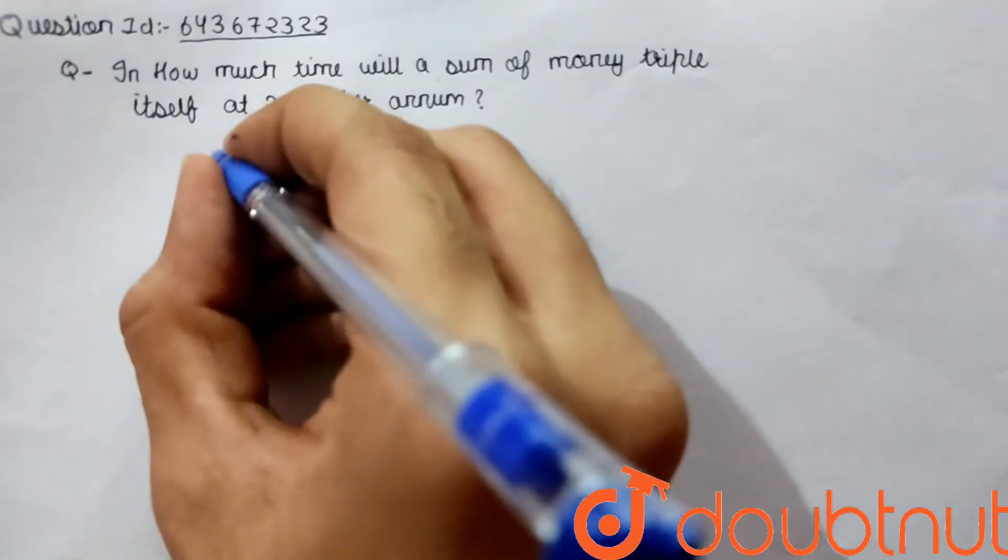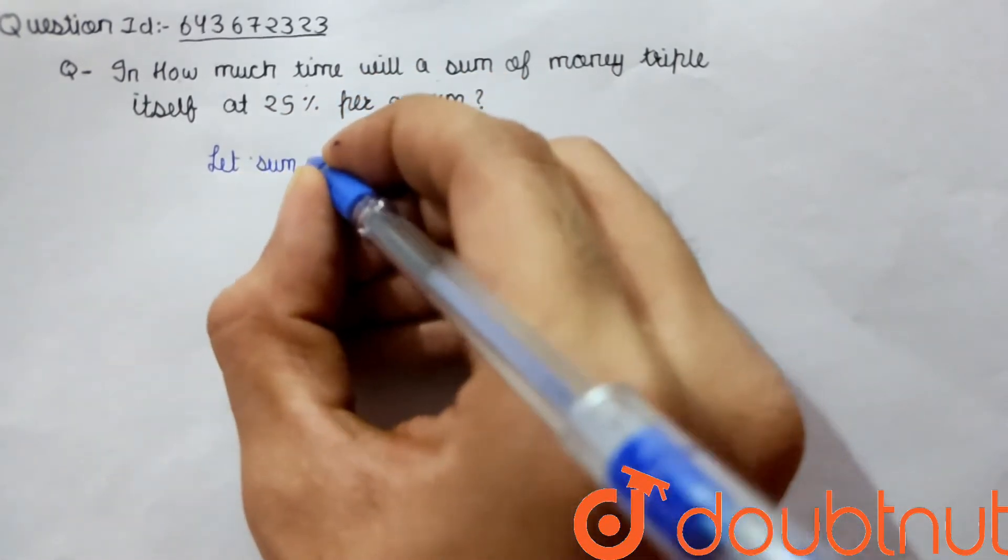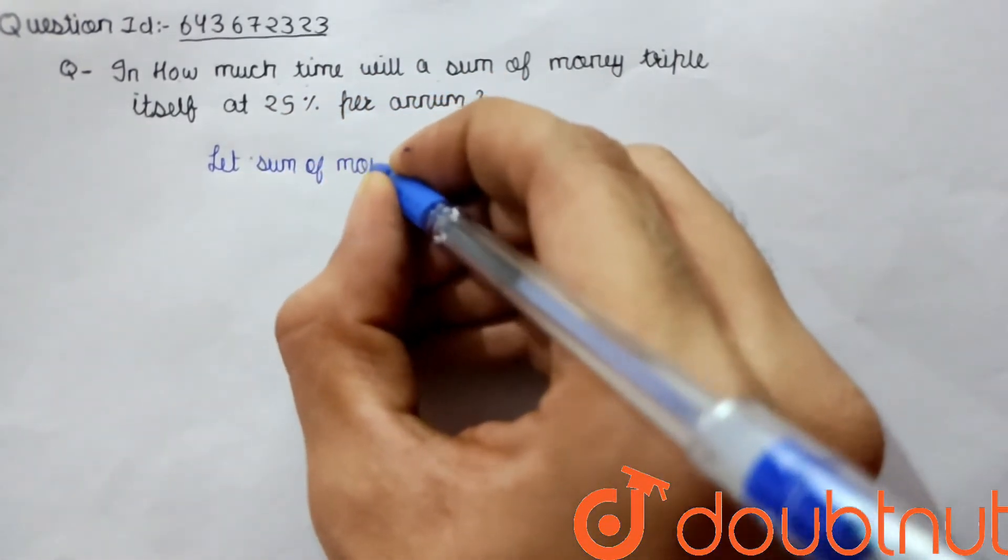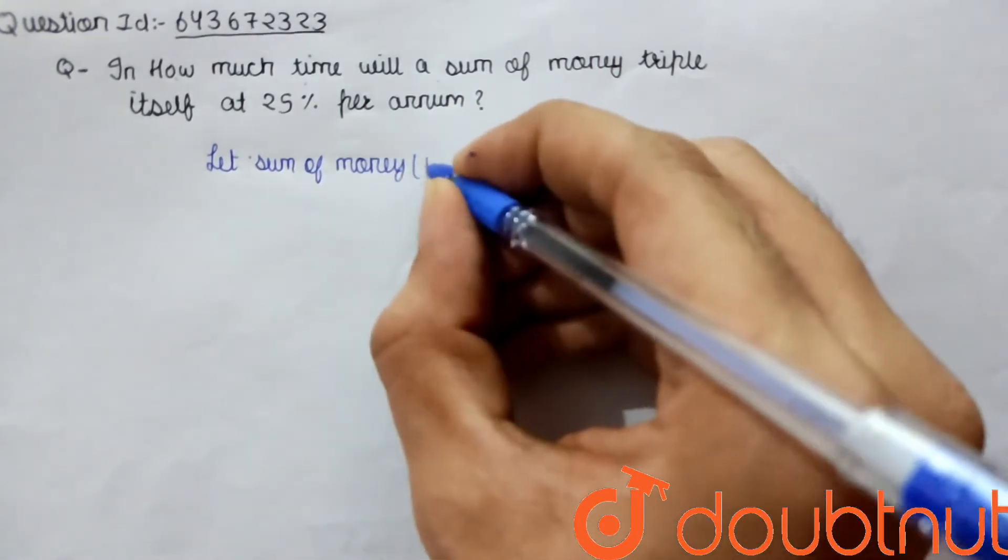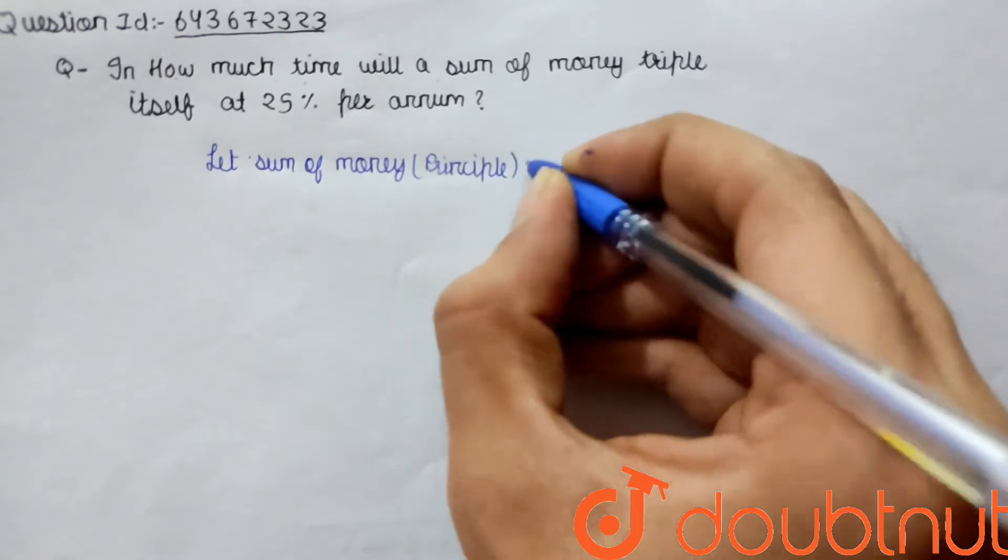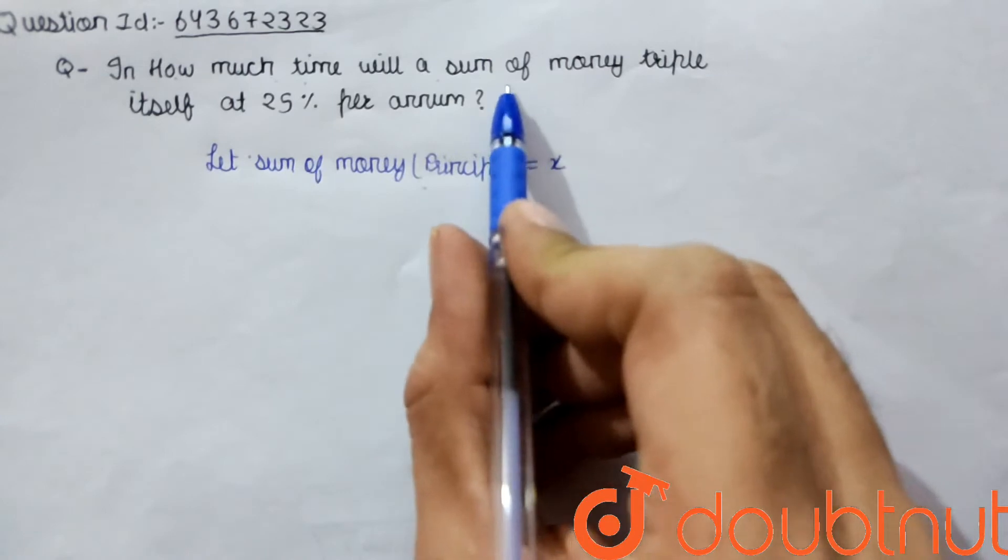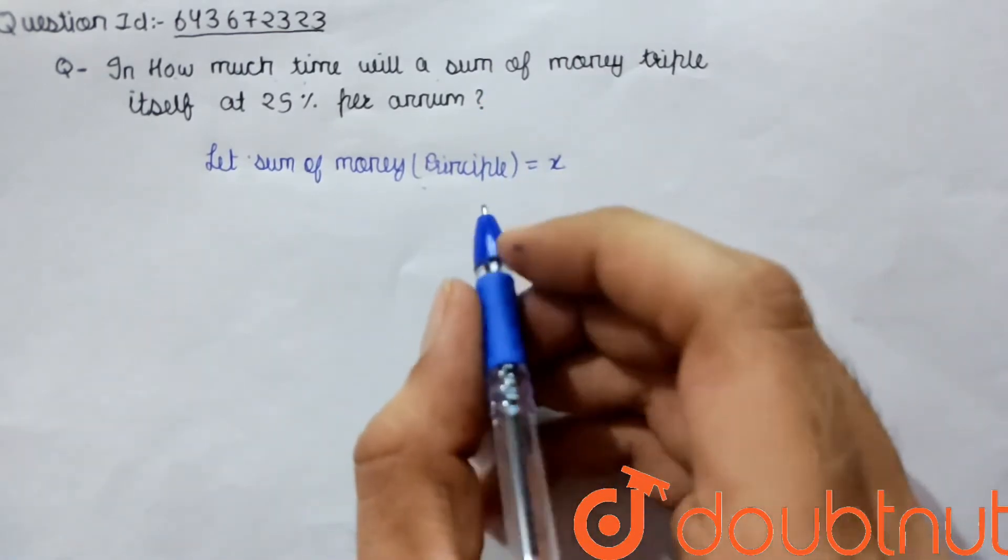So let us assume the sum of money, or principal, be X rupees. We have assumed that the principal amount is rupees X.